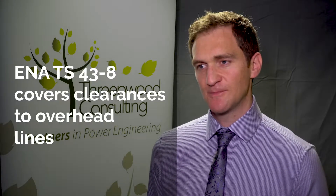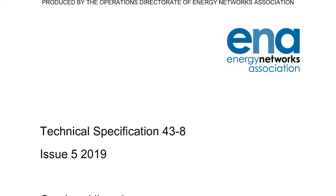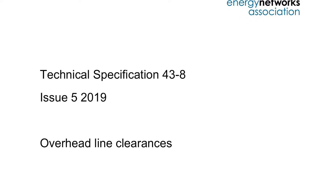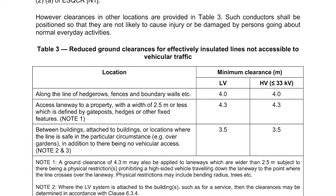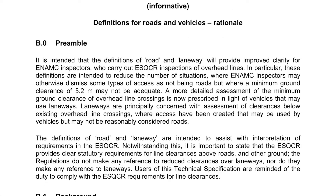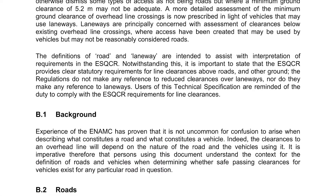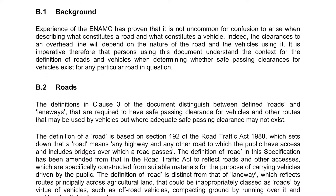The next document is ENA TS 43.8. It's a well-known document in the industry and it covers clearances to overhead lines. We've worked with the member companies a number of times to revise this document. During 2015 we revised the document and we clarified the term 'effectively insulated conductor'. We also introduced a new term 'laneway', which is different from a road, and if you go to Annex B in the document you can find a fuller explanation of that.